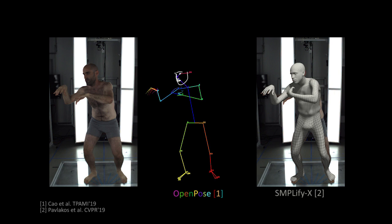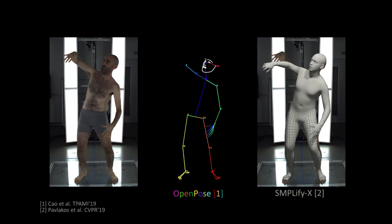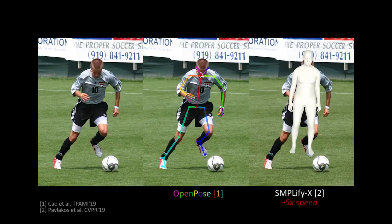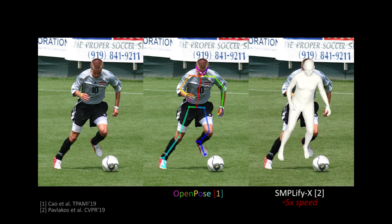First, instead of using all the image pixels, they reduce the image to 2D keypoints or 3D orientation fields. These are often incomplete, misdetected and largely ignore image context. Second, they are based on local optimization and are sensitive to initialization and local minima. Finally, their runtime is prohibitive for interactive applications.